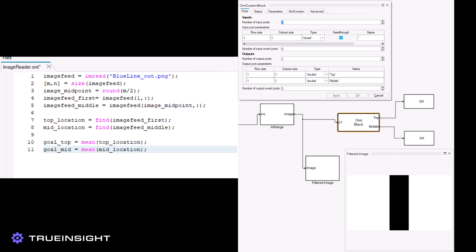We will now use Altair Compose, a powerful open matrix language compiler, to process the final binary image. We will write a simple script to identify if the tape is going straight, turning left, or turning right in the field of view of the robot's camera. We can then implement this custom code as a block in our TwinActivate block diagram.